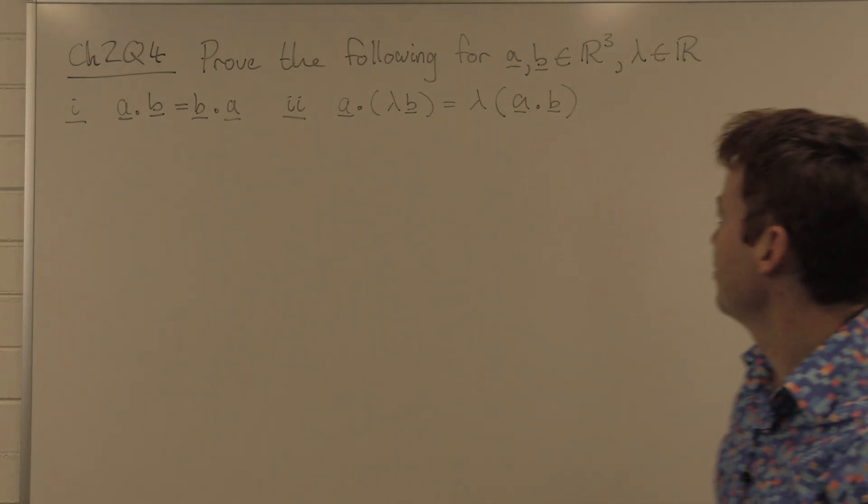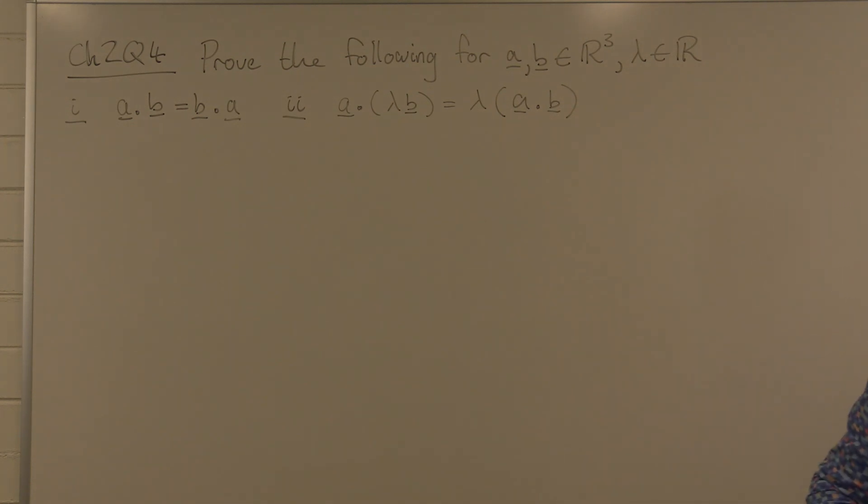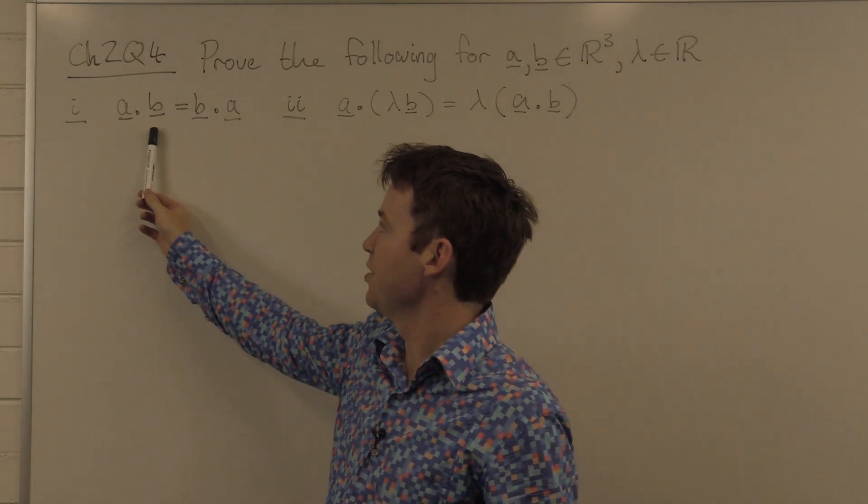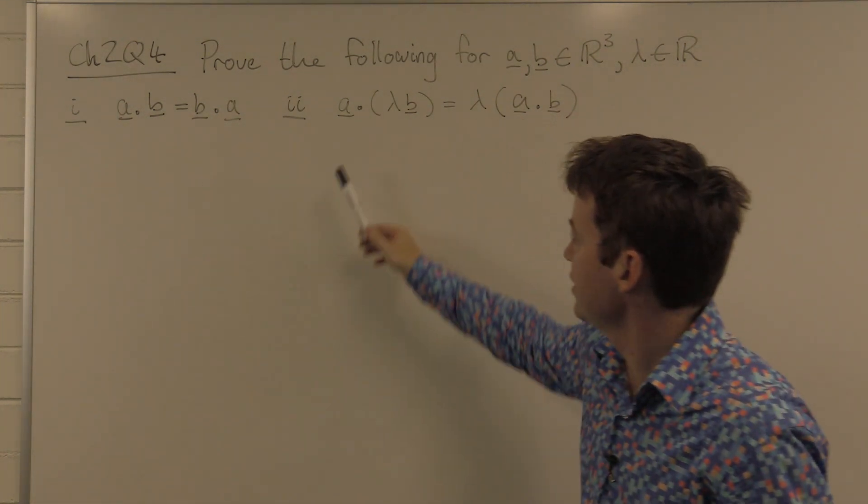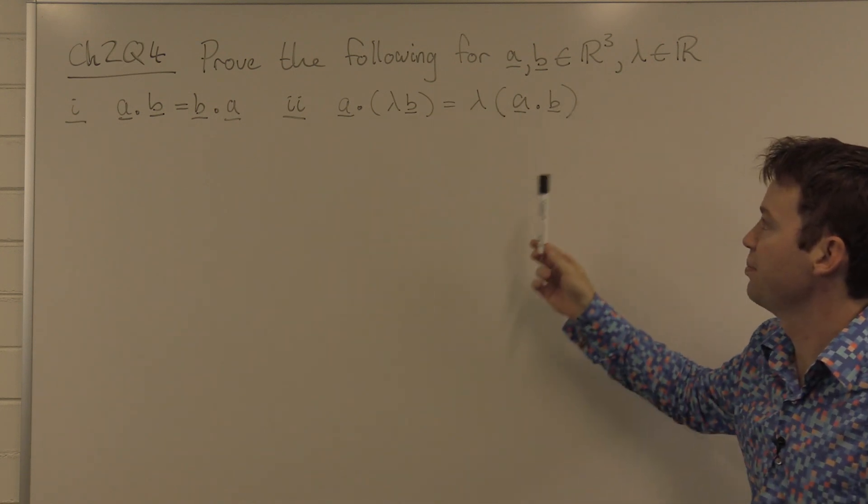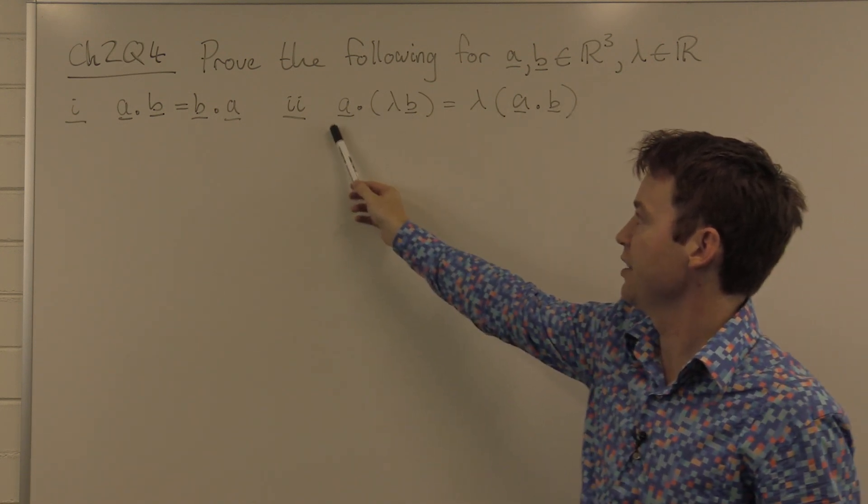Prove the following for A and B, three-dimensional vectors over the real numbers, and lambda a scalar. First is that A dot B equals B dot A, and the second is that A dot with lambda B equals lambda A dot B, or that you can take this lambda and bring it out the front.